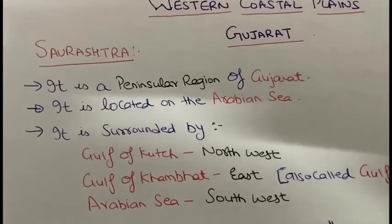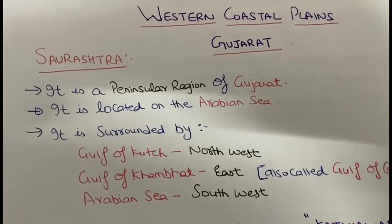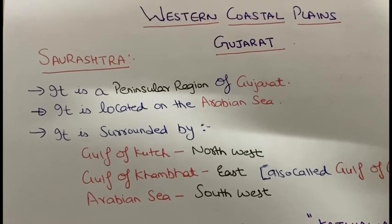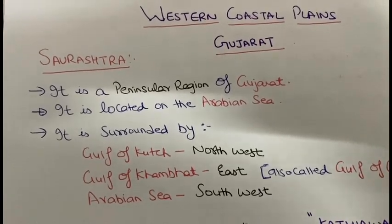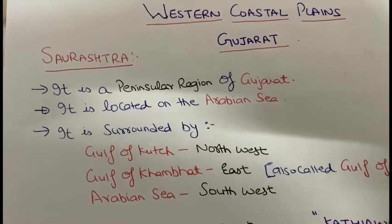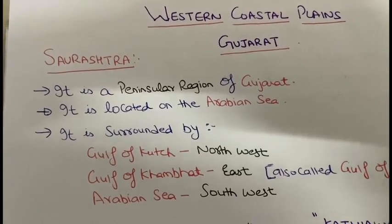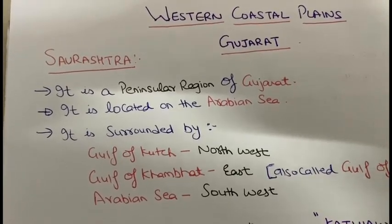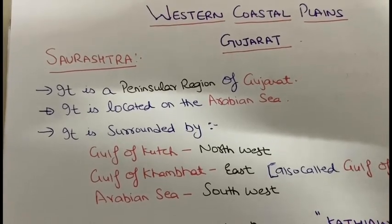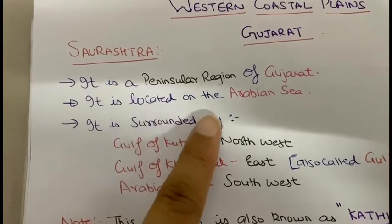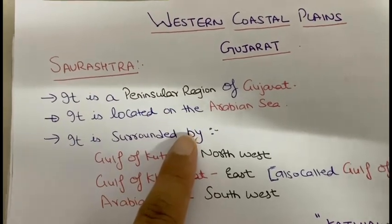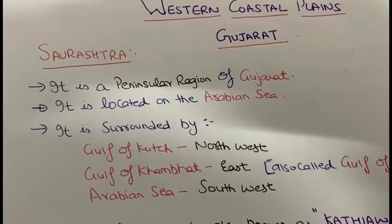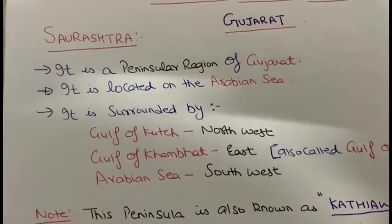What is Saurashtra? Saurashtra is a peninsular region of Gujarat. As we know, 'peninsular' means that three sides are surrounded by a water body and one side is towards the land. So if we say that Saurashtra is a peninsular region, it means three sides are surrounded by water bodies. It is located on the Arabian Sea, and in the map we can clearly see how this region extends towards the Arabian Sea.